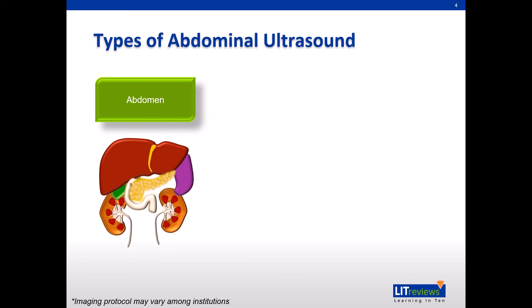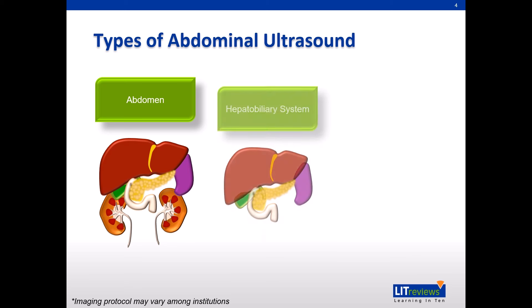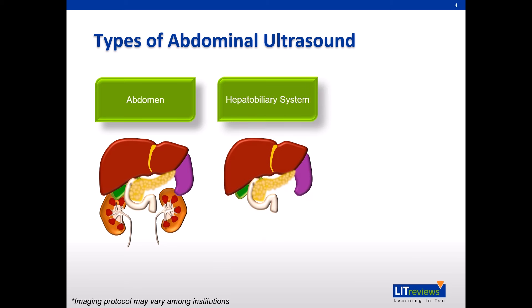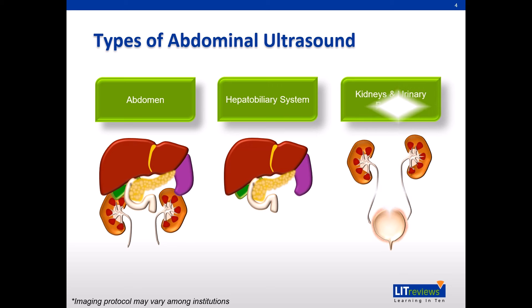Abdominal ultrasound imaging protocols may vary among institutions. An abdominal scan generally evaluates the liver, gallbladder, kidneys, spleen, and pancreas. Alternatively, targeted ultrasound of the hepatobiliary system or kidneys and urinary bladder may also be performed.